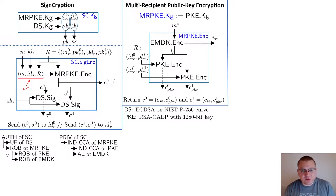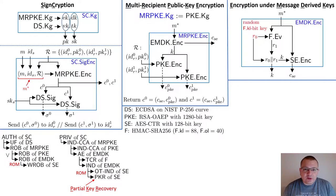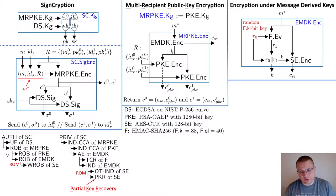In the iMessage design, the public key encryption scheme PKE is instantiated with RSA-OAEP. We can define the EMDK scheme in different ways to recover either the legacy or the current version of iMessage. For the current version, we already discussed the construction on the previous slide. Formally, we model HMAC-SHA256 as a function family F and AES-CTR as a symmetric encryption scheme SE. We proved the robustness and authenticated encryption security of this EMDK scheme based on several assumptions about the function family and the symmetric encryption scheme. Some of these proofs are done in the random oracle model.